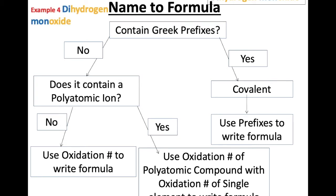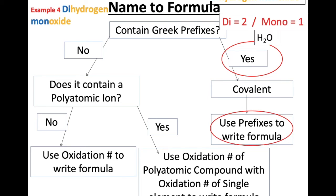Let's go through examples. First: dihydrogen monoxide. Does it contain Greek prefixes? Yes — "di" and "mono" are Greek prefixes. So we're looking at a covalent bond and we're going to use those prefixes to write the formula. Di on hydrogen means two hydrogens; mono on oxygen means one oxygen. That gives me H2O — our lovely friend water.